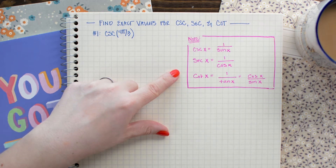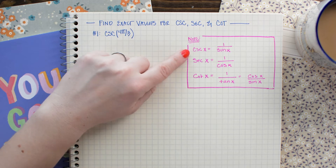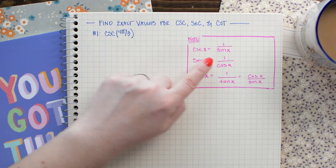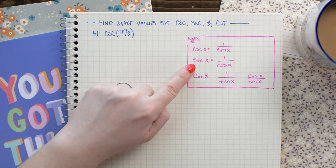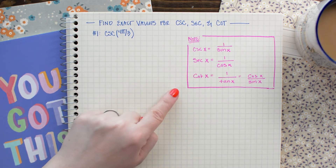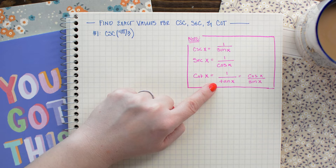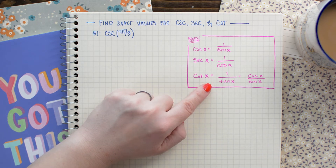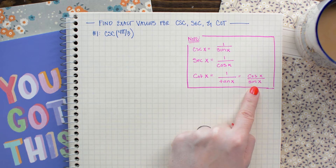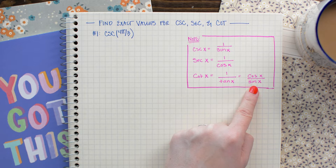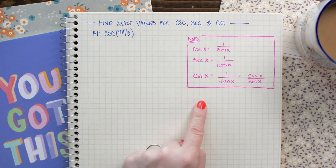In order to solve the problems today, you need to know that the cosecant of x is the same as 1 over sine of x, the secant of x is the same as 1 over cosine x, and the cotangent of x is the same as 1 over tangent x. Because we can also write tangent x as sine over cosine, cotangent x can also be represented as cosine x over sine x. I'm going to be using this identity where cotangent of x equals cosine x over sine x throughout today's problems.